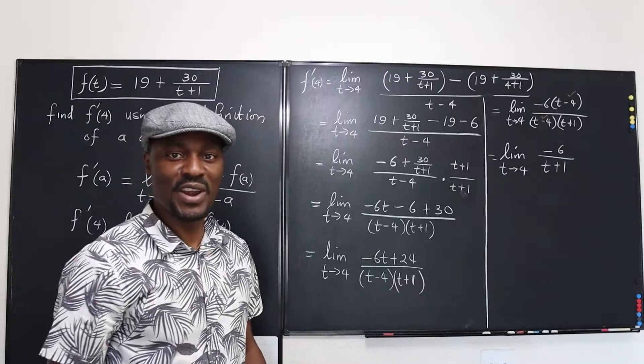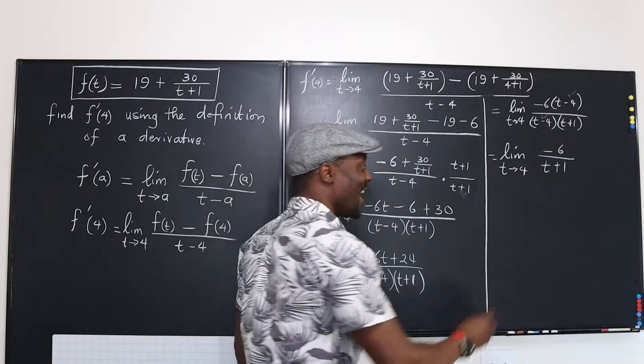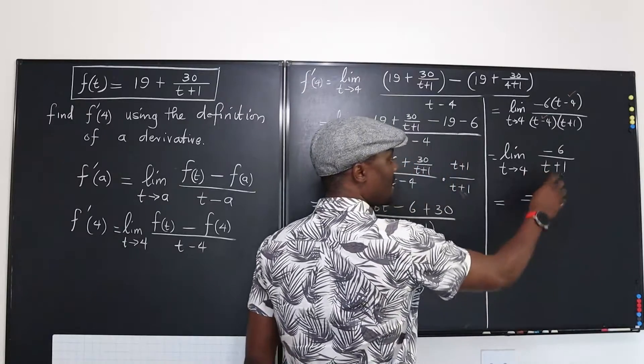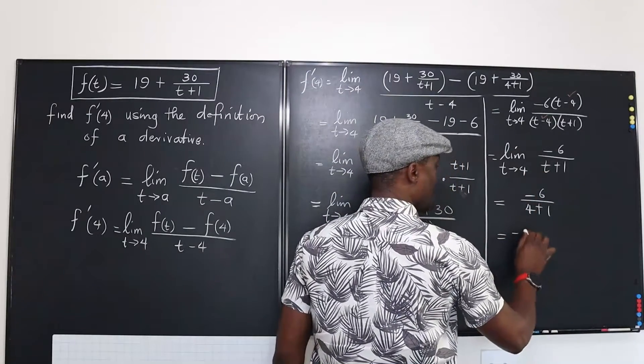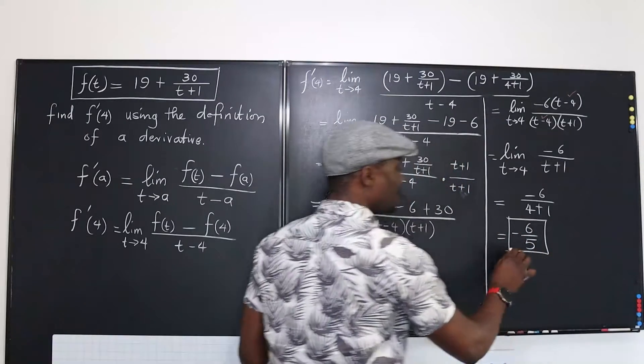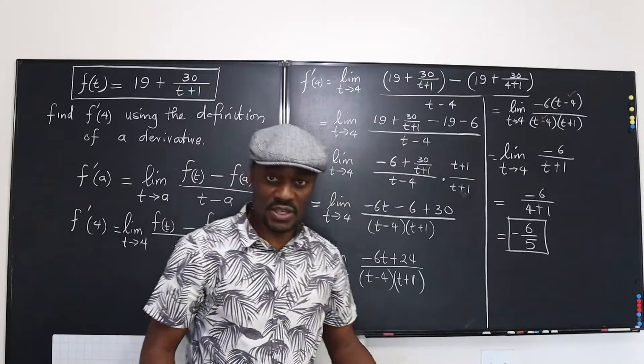Now we can substitute without worrying about whether we get 0 or not. Well, this is going to be equal to negative 6 over 4 plus 1, that's negative 6 over 5. That is the limit of this function using the definition.